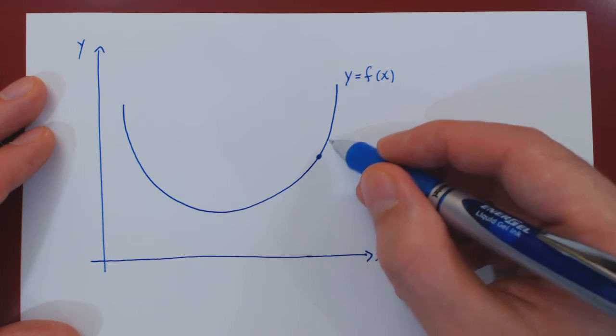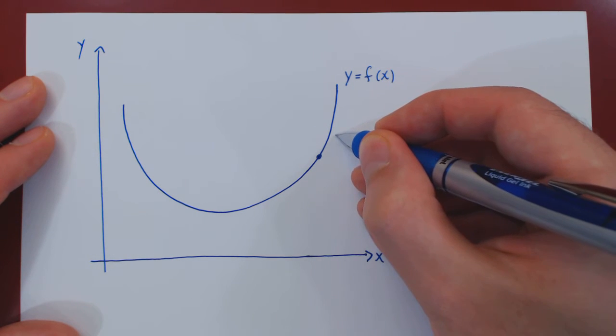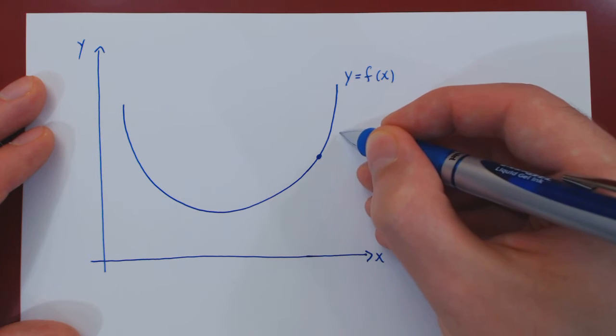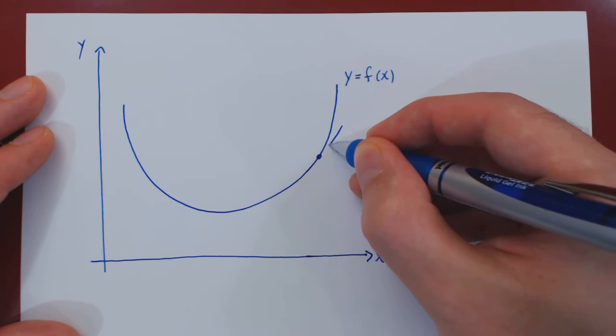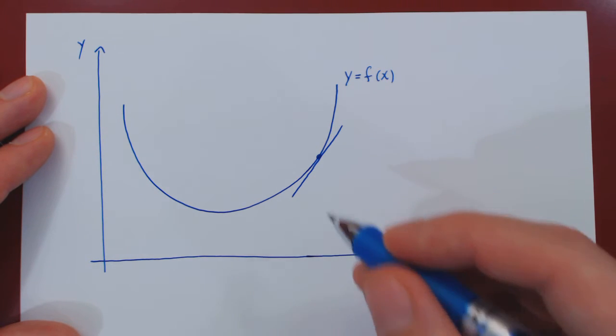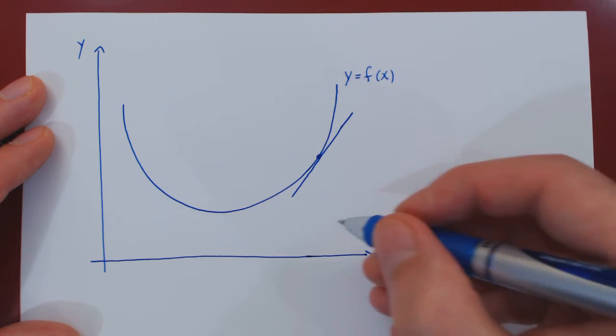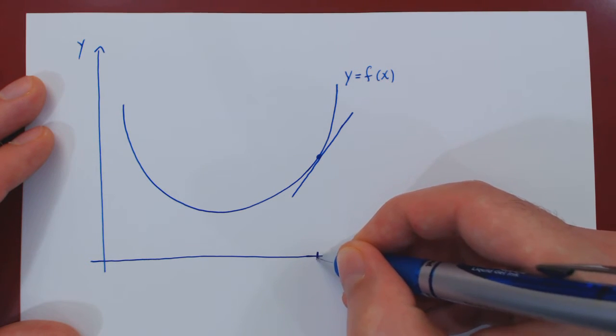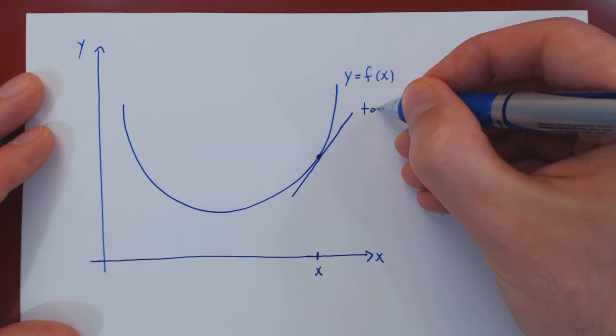And this line, again if the curve is smooth enough, this line is unique, and this line is called the tangent line to the curve. Say we pick a point x. Again this is called the tangent line.